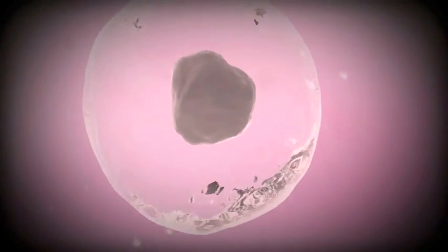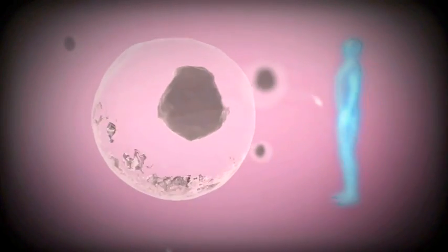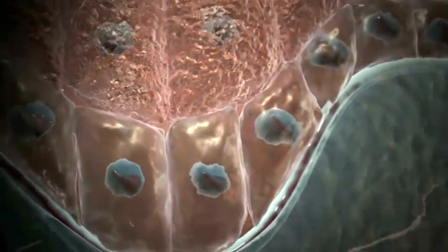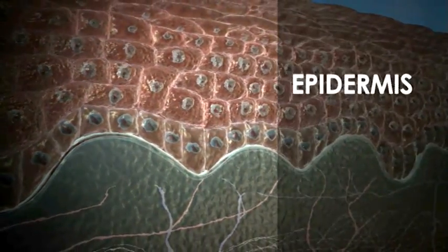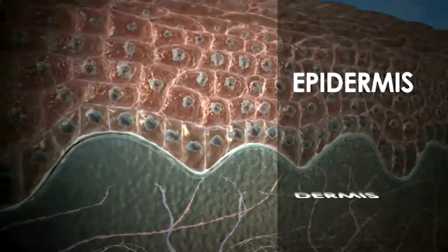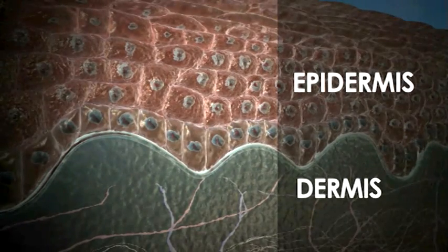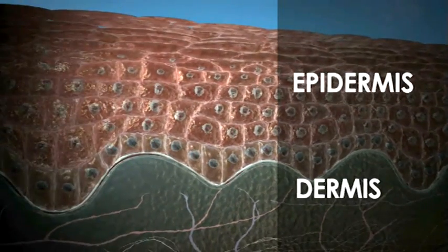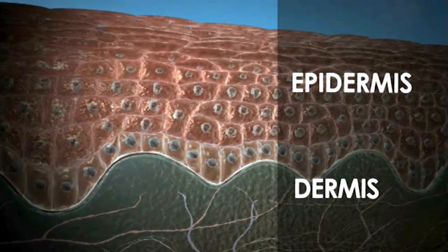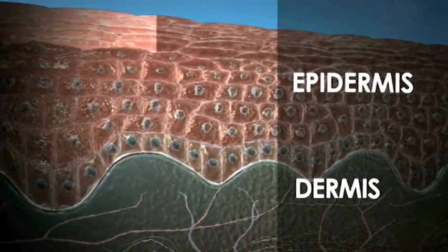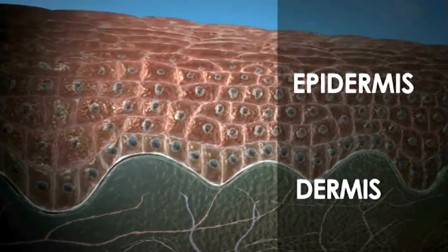In humans, skin is the largest organ of the integumentary system and its main task is to protect the underlying tissues. It consists of two different sections: the epidermis, that is the outer layer, and the dermis, that is an inner layer. The line of demarcation between the two layers follows a wavy pattern, whereas the outer surface is straight.